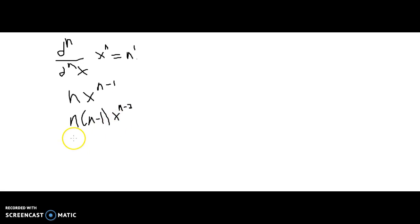And then you keep going with this: n times n minus 1 times n minus 2, and then you keep going times dot dot dot, and eventually get to n minus n minus 1, which is just 1.